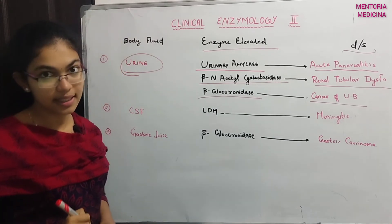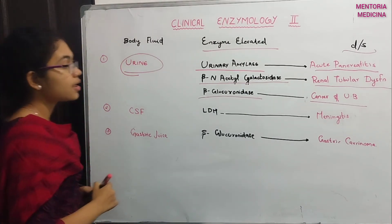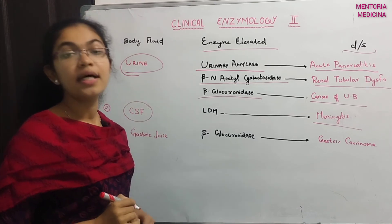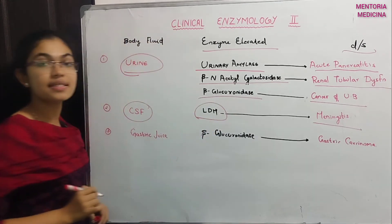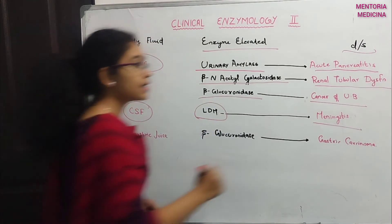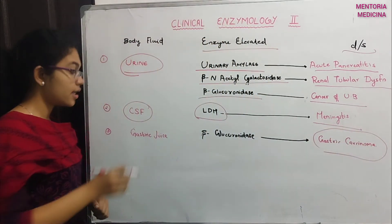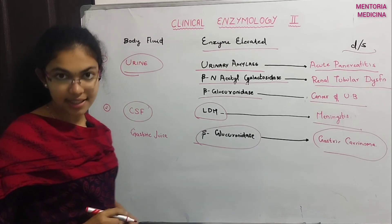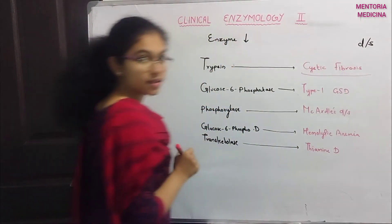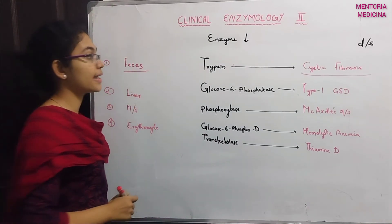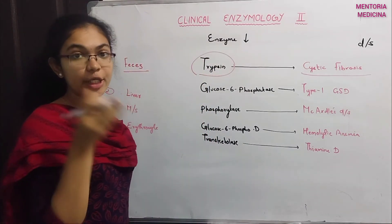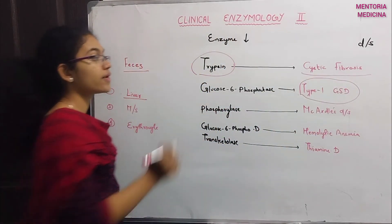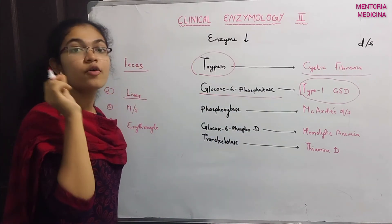Lactate dehydrogenase enzymes are elevated in urinary glucose testing. For gastric carcinoma, gastric juice is tested using beta-glucuronidase enzymes. For cystic fibrosis disease, the trypsin enzyme is tested at normal levels.